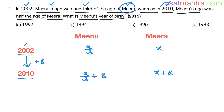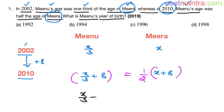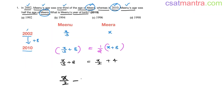In 2010, Mino's age was half the age of Meera. So Mino's age is equal to half the age of Meera. Solving for X: X by 3 plus 8 is equal to X by 2 plus 8 by 2, that is 4. So X by 2 minus X by 3 is equal to 8 minus 4, which is 4.